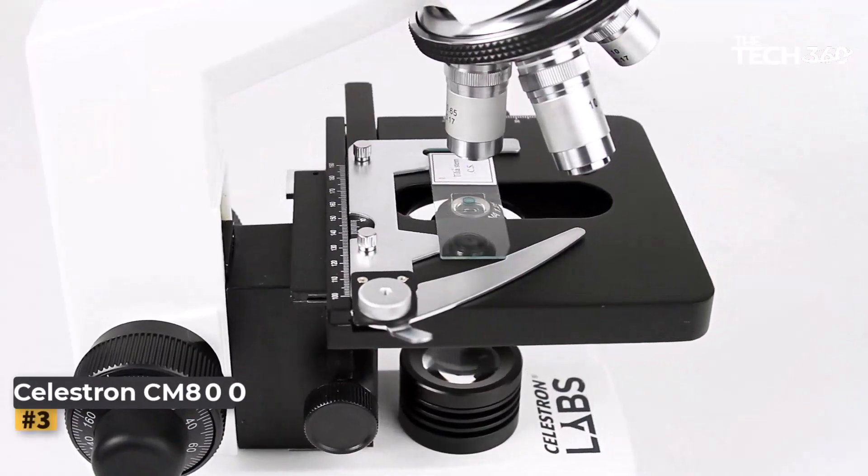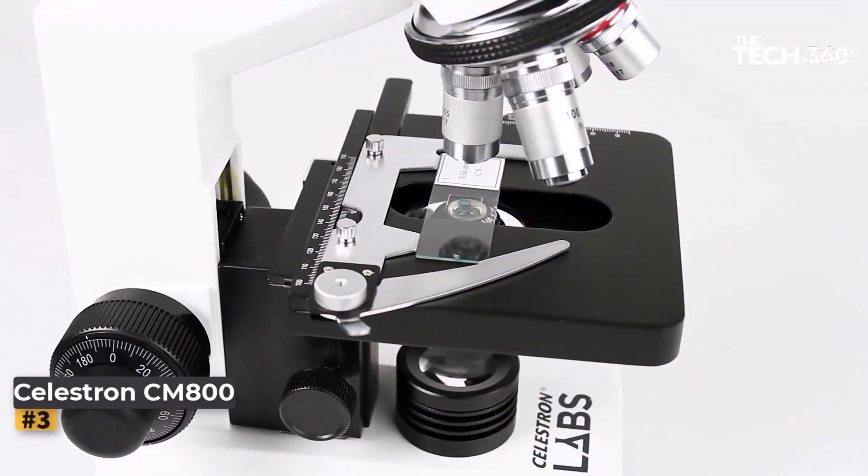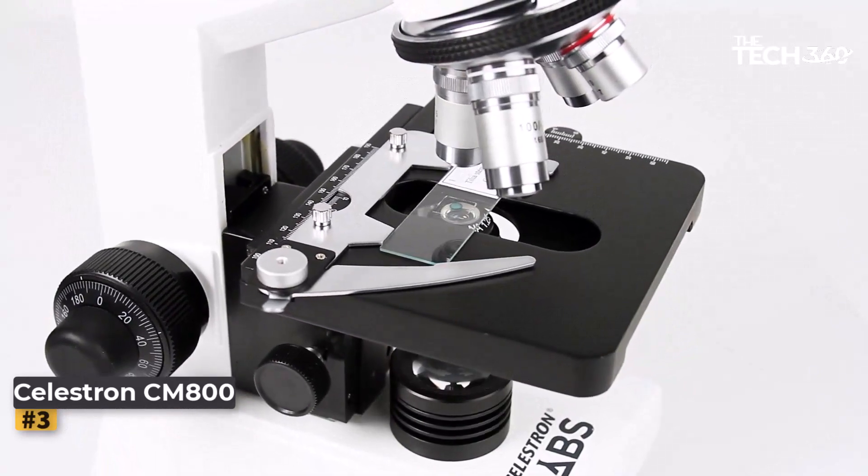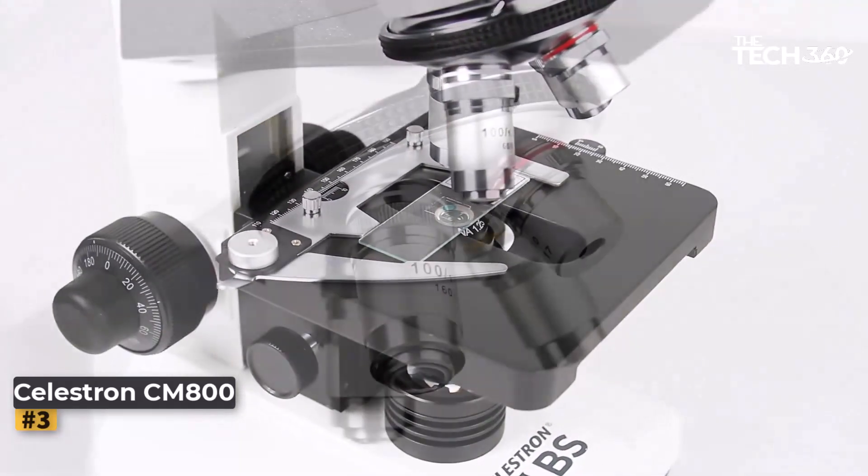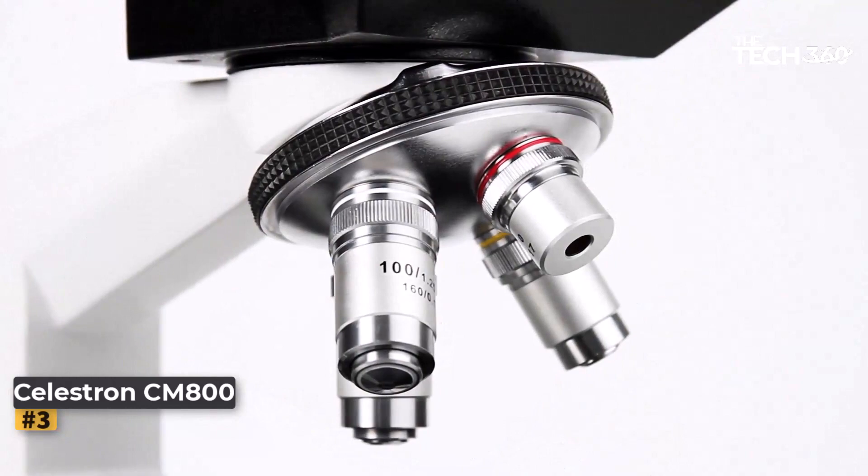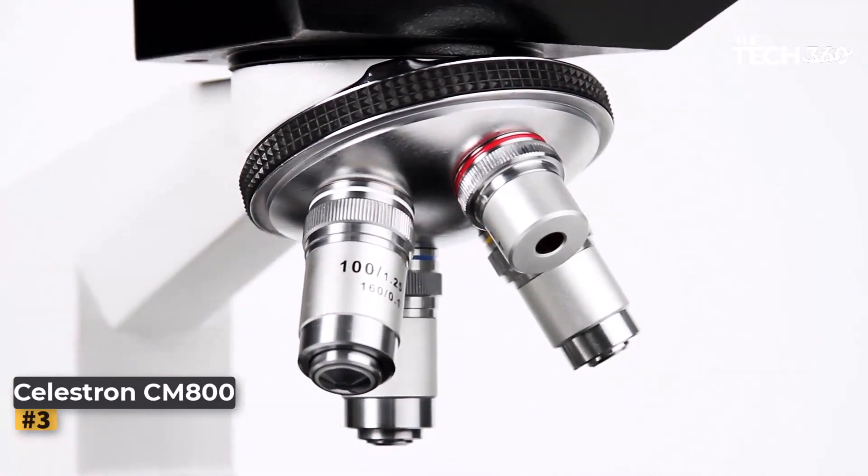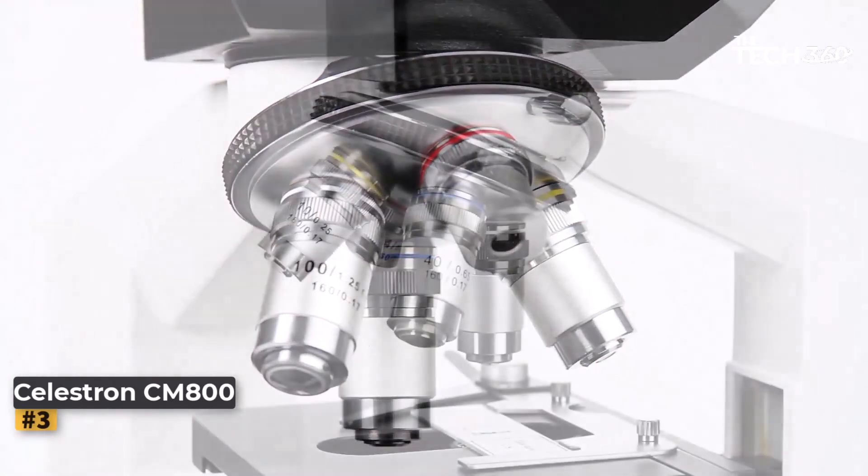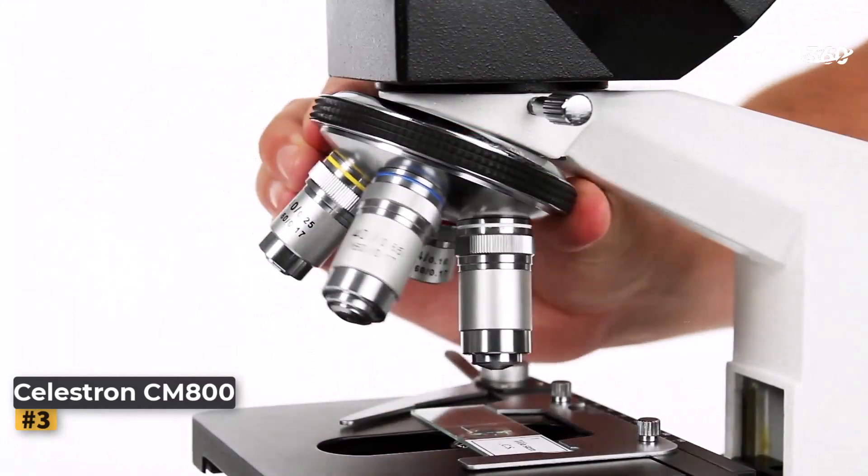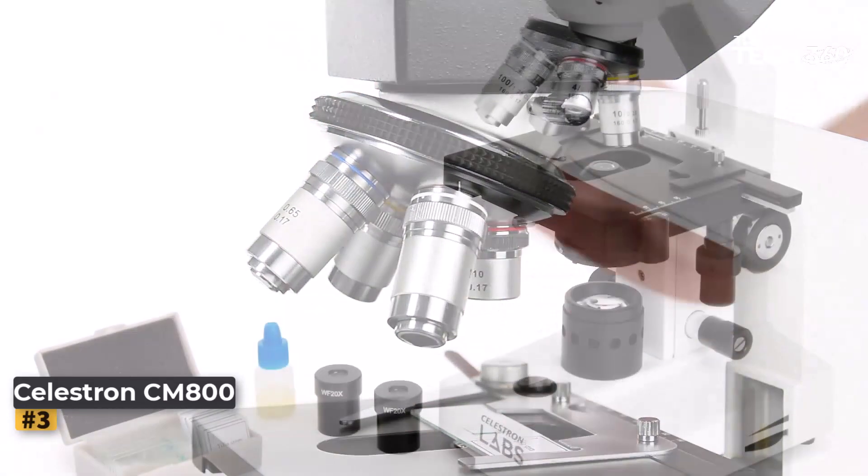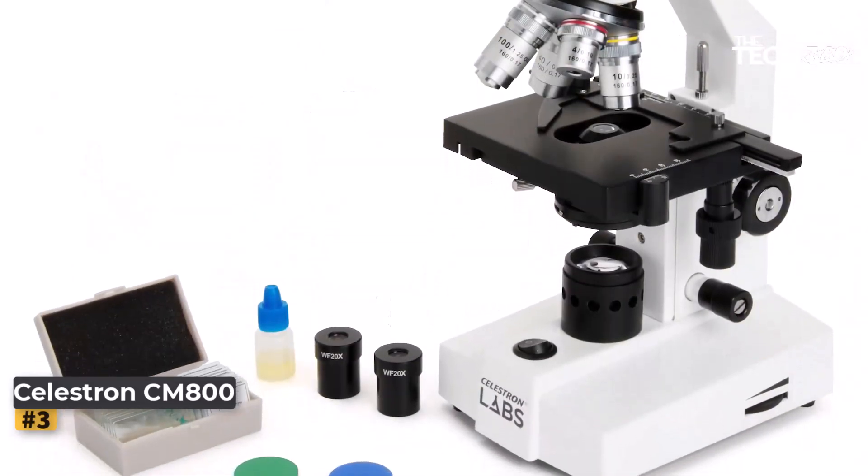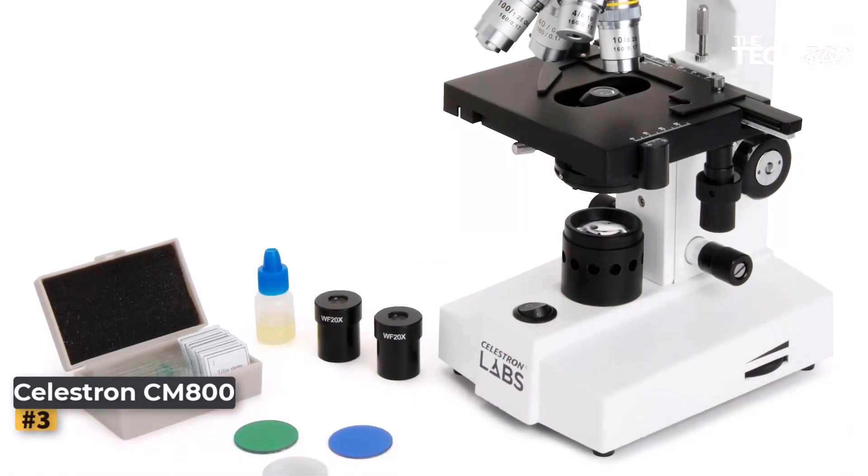Number 3: Celestron CM800 Compound Microscope. The Celestron CM800 Compound Microscope is an affordable option marketed as lab-grade. It is an excellent choice for college and university students. With a sturdy all-metal build, two eyepieces, and three objective lenses, this microscope offers magnifications from 40X to an impressive 800X.